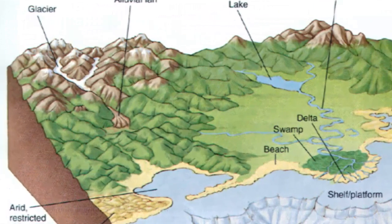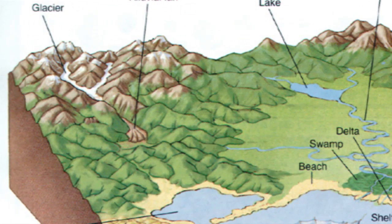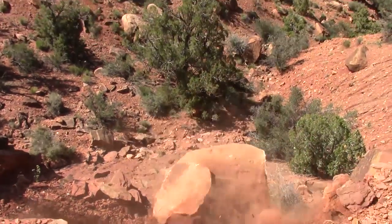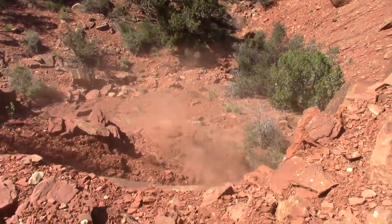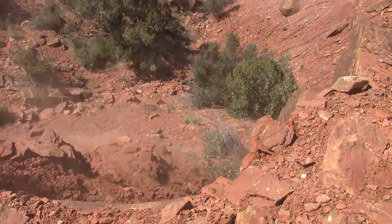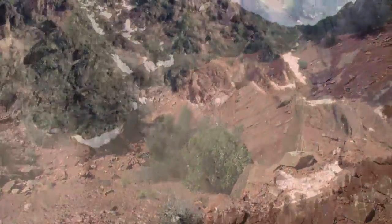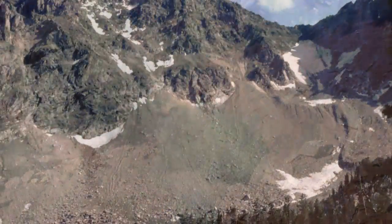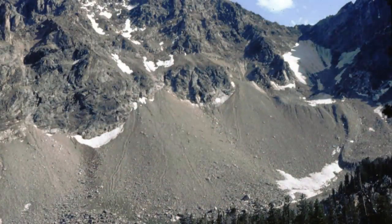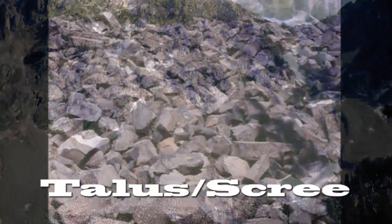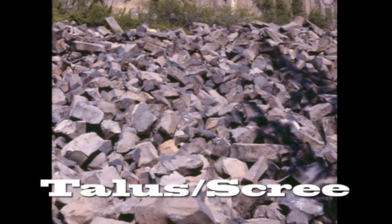Our high elevations are dominated by the erosional agents of ice and gravity. Rockfall from the face of a cliff produces a steep slope of poorly sorted and angular rock fragments that form a deposit we call talus, or scree.